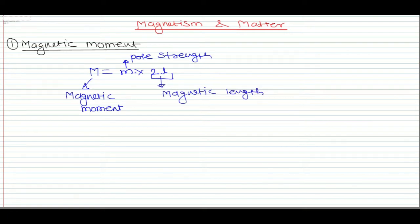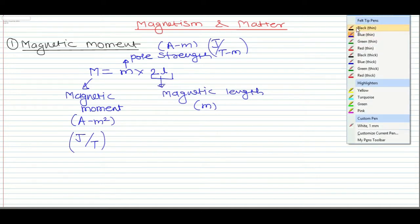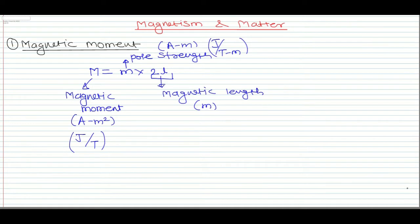The SI unit of magnetic moment is ampere meter squared. For polar strength, the SI unit is ampere meter, and for magnetic length it is meter. This can also be written as joule per tesla. This is the first formula you need to understand.